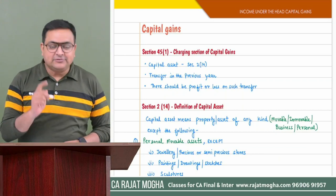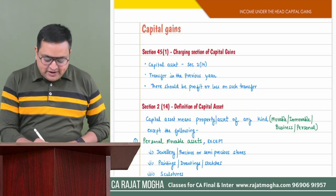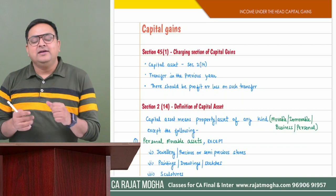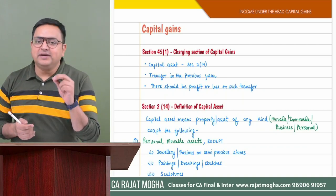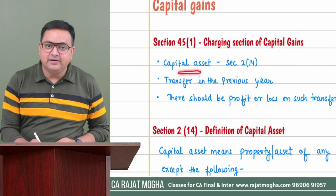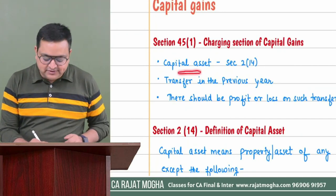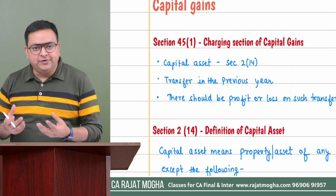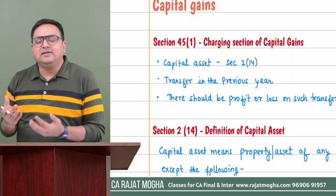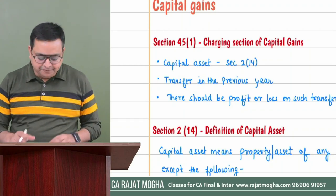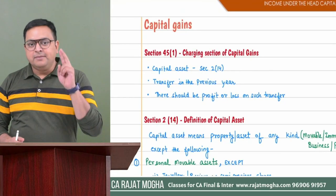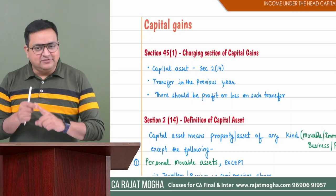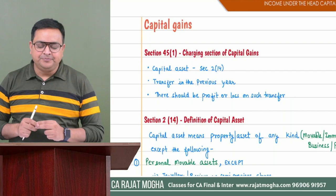The charging section of capital gain is section 45(1). This section says two things: first, there must be a capital asset, and second, the assessee must have transferred such capital asset. Then capital gain will arise. On that particular transfer, if there is any profit we call it capital gain, and if there is a loss we call it capital loss. Both are important conditions.